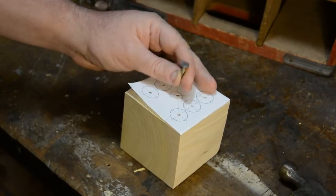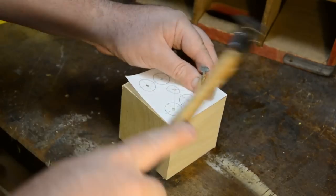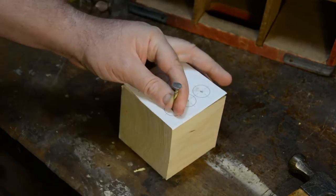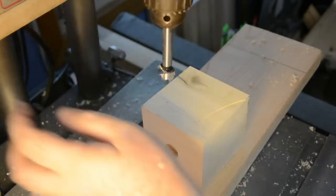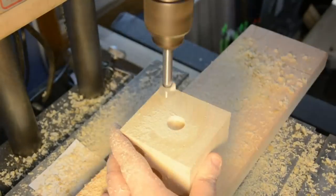Now lining up your template on the top of the dice, you're going to use your hammer and nail to mark out the dead center of each hole. Remembering that opposite sides should add up to the number seven. So number one will be opposite number six, number two will be opposite five, and three will be opposite four.